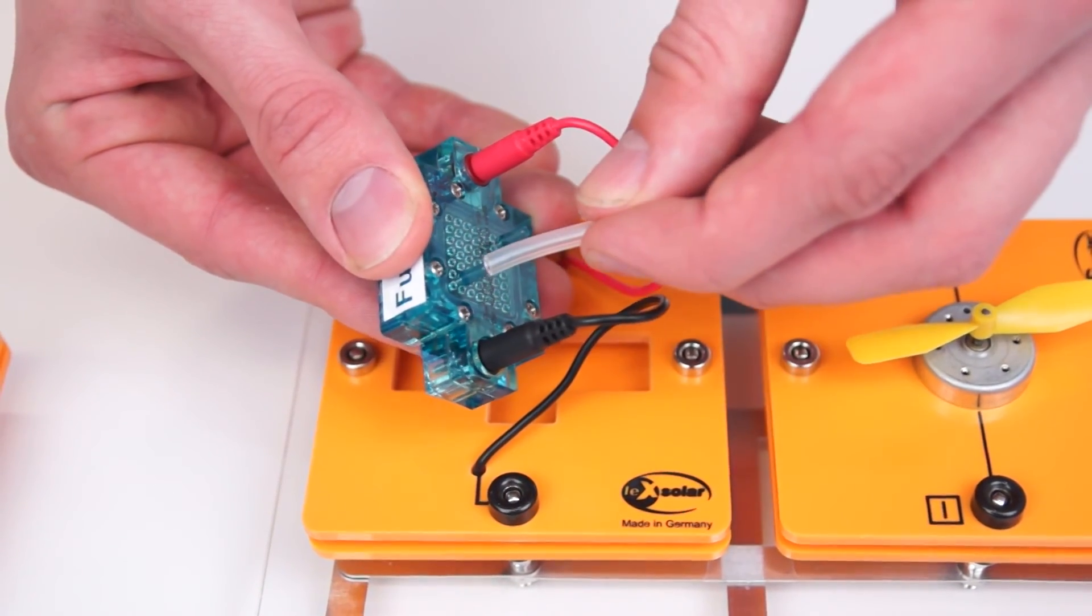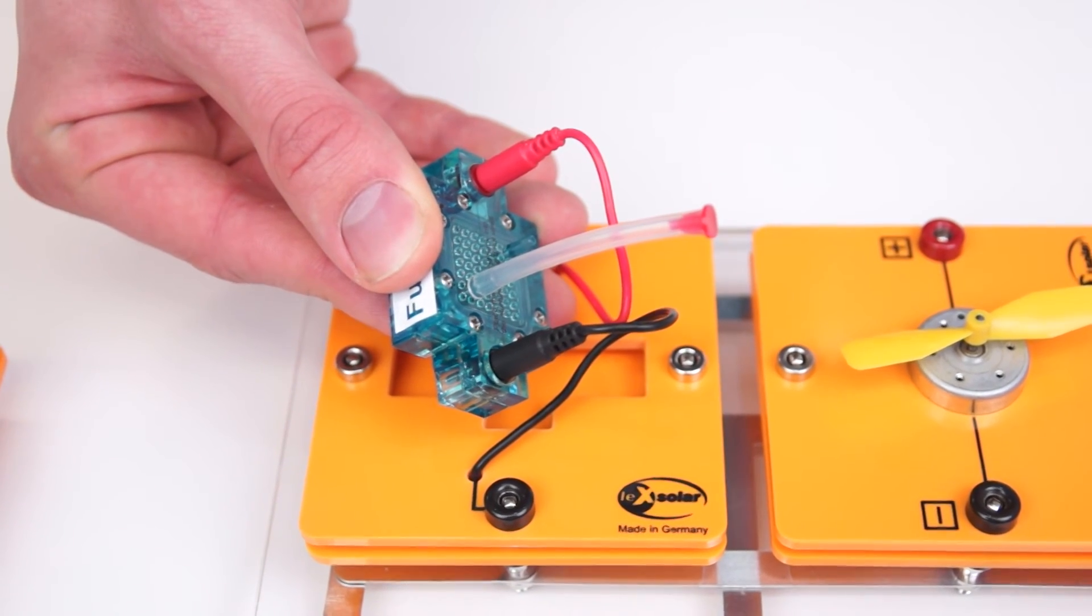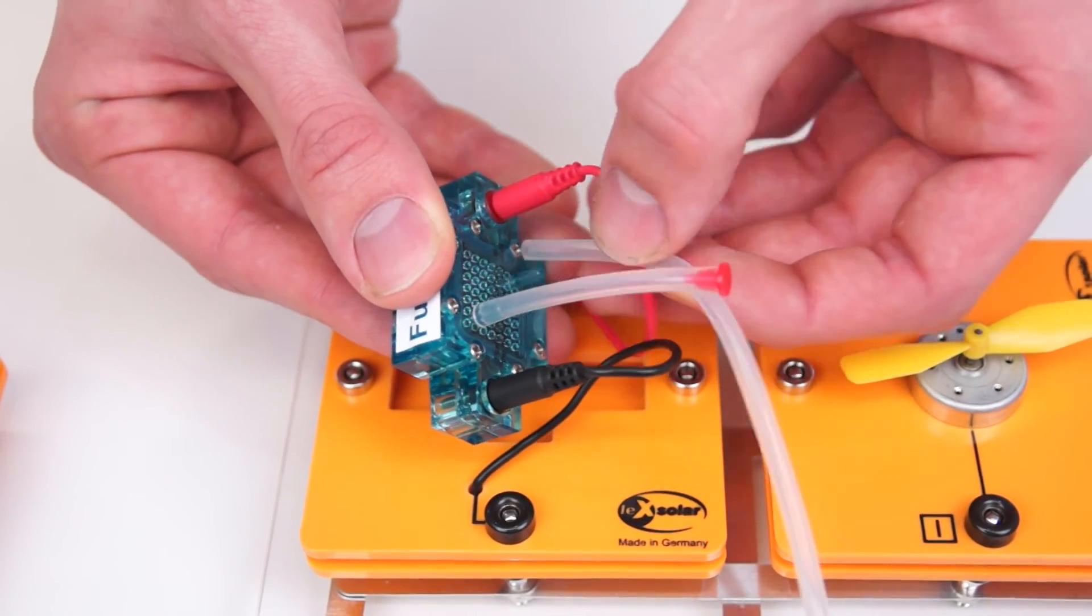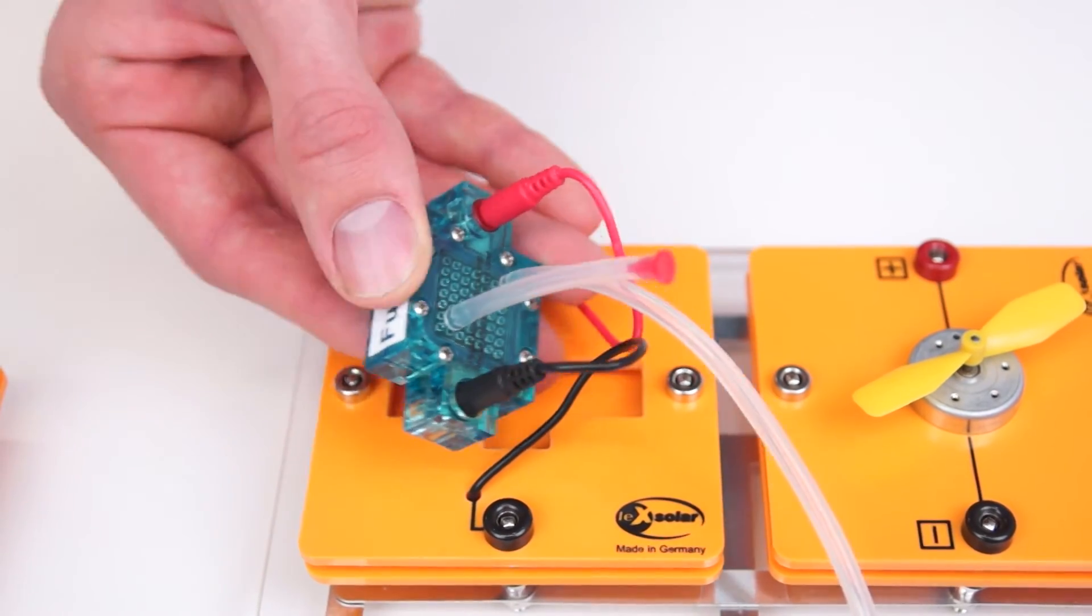Now we attach the hose with the pin in the upper opening and join the PEM fuel cell with the valve for the supply of hydrogen. Finally we put the fuel cell in the module.